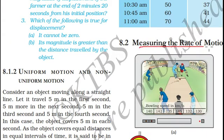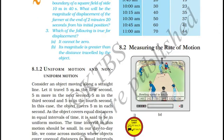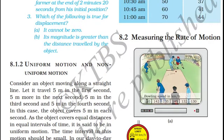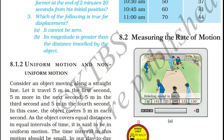Now let us look at measuring the rate of motion. We know there are two types of motion: uniform motion and non-uniform motion. In example 8.2a, you can notice a television showing a cricket match being telecasted, where you can see the bowling speed in an over. The speed at which the first ball is thrown by the bowler is 140 km per hour.